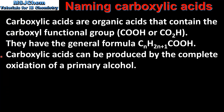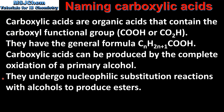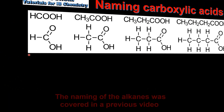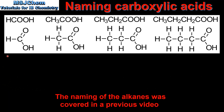Carboxylic acids can be produced by the complete oxidation of a primary alcohol. They also undergo nucleophilic substitution reactions with alcohols to produce esters. Both of these types of reactions are covered in more detail in later videos. Carboxylic acids are named by dropping the E from the parent alkane and adding oic acid.